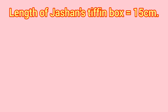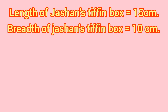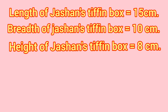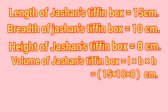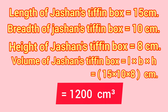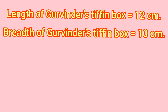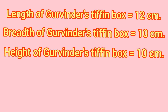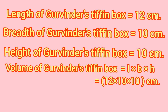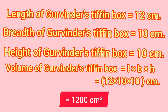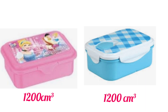We can solve this question as follows. Length of Jashan's lunchbox is 15 cm, breadth 10 cm, and height 8 cm. Volume of Jashan's lunchbox equals length into breadth into height — 15 into 10 into 8 — we get 1200 cm³. Similarly, length of Gurvinder's lunchbox is 12 cm, breadth 10 cm, and height 10 cm. Volume equals 12 into 10 into 10 — we get 1200 cm³. So both lunchboxes are equal.